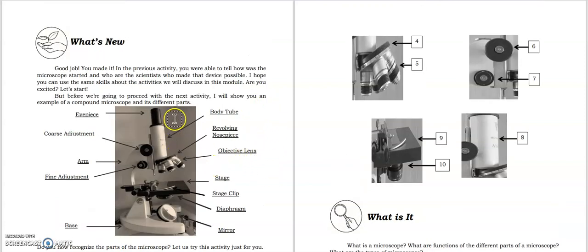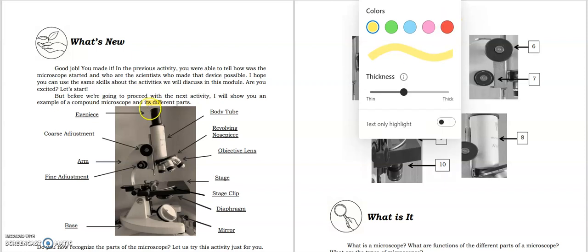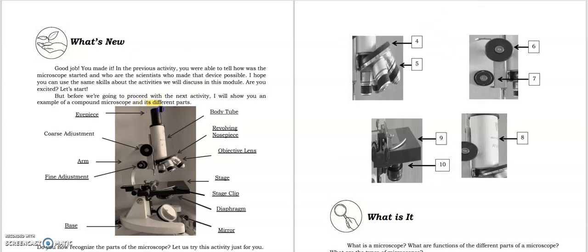For the 'what's new' portion, we're going to name the parts of the microscope. It starts with the eyepiece. This is our eyepiece, you can see it in the highlight.